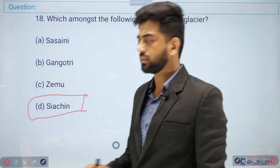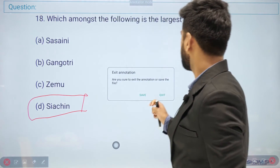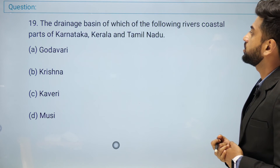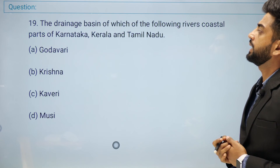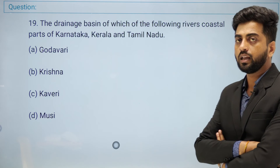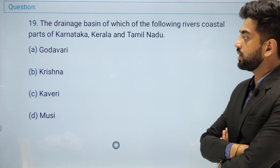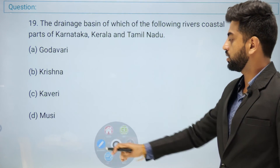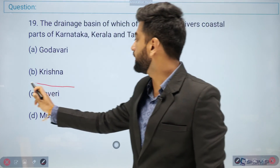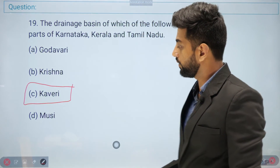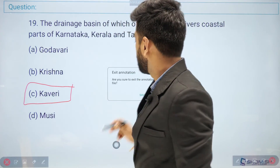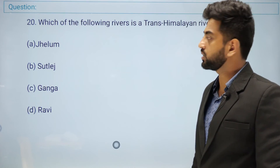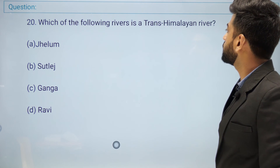Question number nineteen: the drainage basin of which of the following rivers covers the coastal parts of Karnataka, Kerala, and Tamil Nadu? Options: Godavari, Krishna, or Kaveri. The right answer is option C — Kaveri.